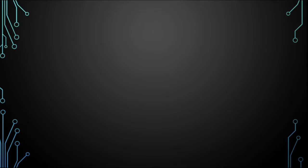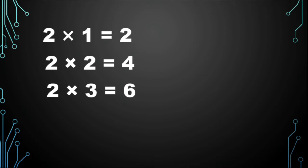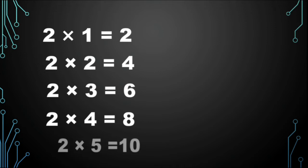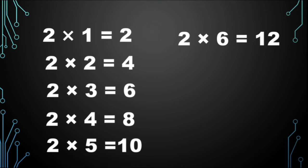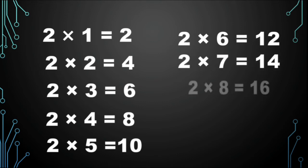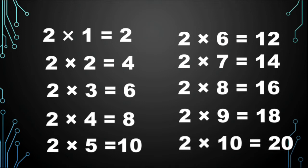Let's learn the table of 2 one more time. 2 1s are 2, 2 2s are 4, 2 3s are 6, 2 4s are 8, 2 5s are 10, 2 6s are 12, 2 7s are 14, 2 8s are 16, 2 9s are 18, 2 10s are 20.